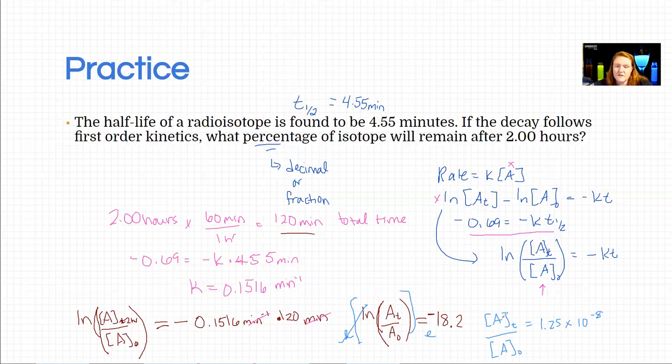This is a ratio, which is a fraction, which is kind of like a decimal, which is kind of like a percentage. So of course, if I want to make this into a percentage, I just multiply the whole thing by 100%. So 1.25 times 10 to the -8 is going to be the same thing but 10 to the -6 percent. And that is how much is left. It's a very small amount.